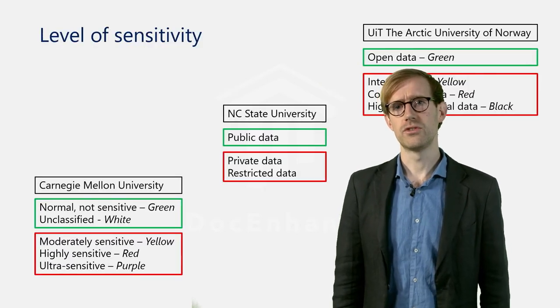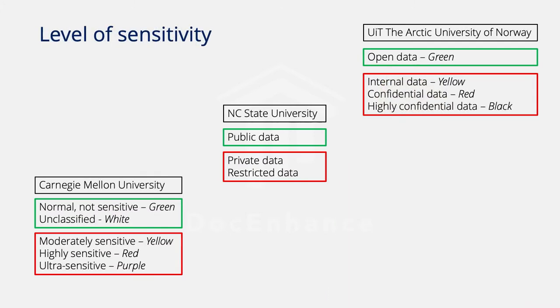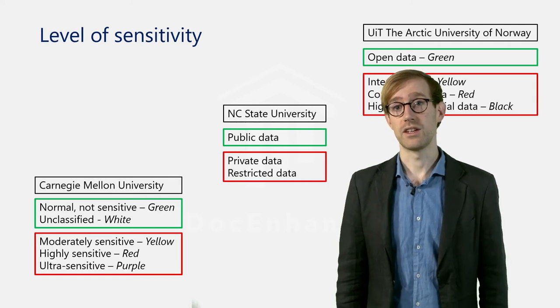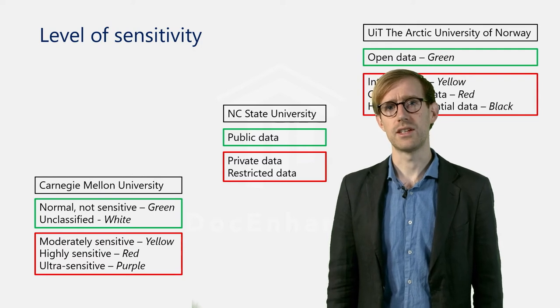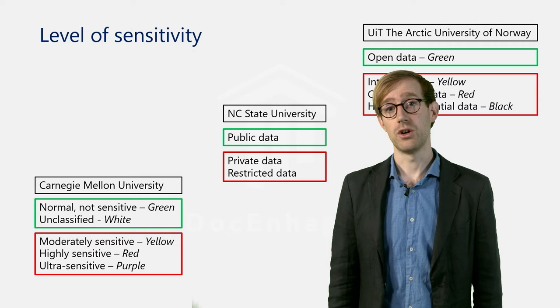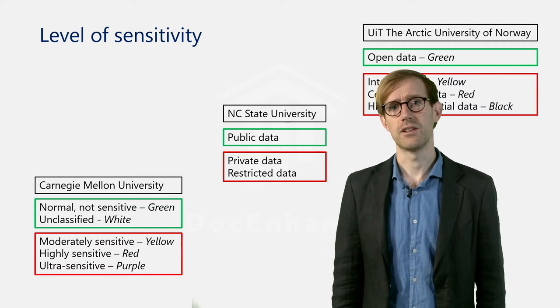Research institutions have different ways of classifying data according to sensitivity. Some are operating with colour coding for the classification of research data, for example green for non-sensitive data and red for sensitive data, or more refined versions, such as the example from Carnegie Mellon University. Others, for example North Carolina State University, are using a simpler but still distinct system. The basic distinction between data that can be shared openly on one side and data with limited or no access on the other side permeates most systems.